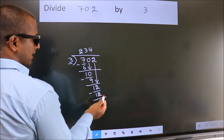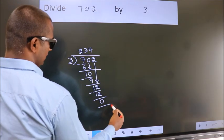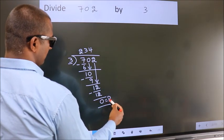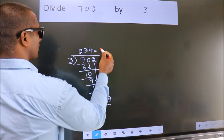No more numbers to bring down. So we stop here. This is our remainder. This is our quotient.